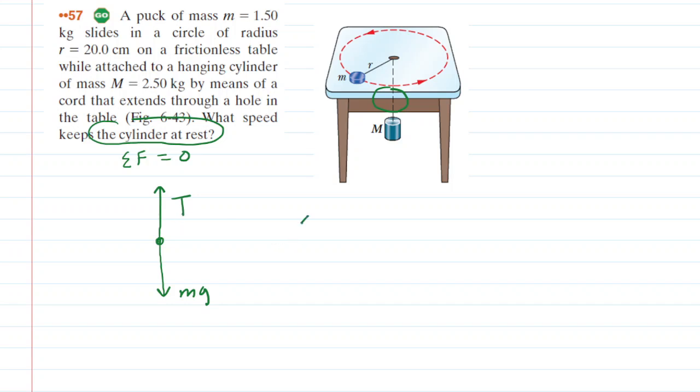As we said, the sum of these two forces acting in the y direction has to equal zero. We will arbitrarily call the upward direction positive, downward negative. So that means the positive tension minus mg would have to equal zero.